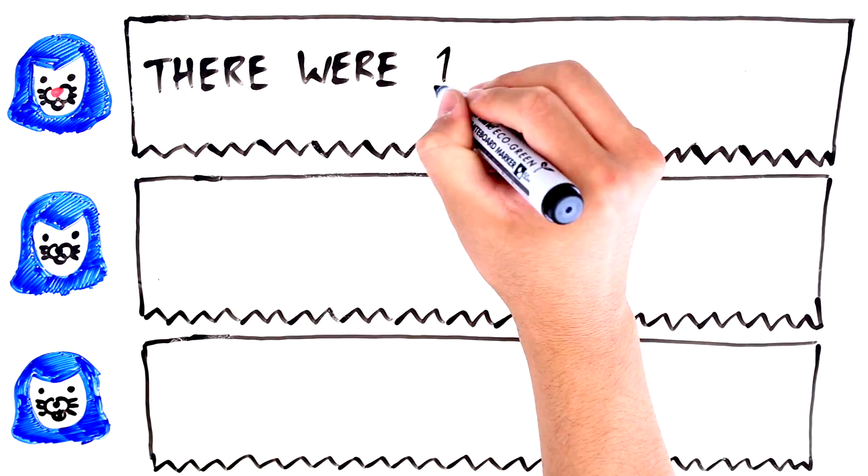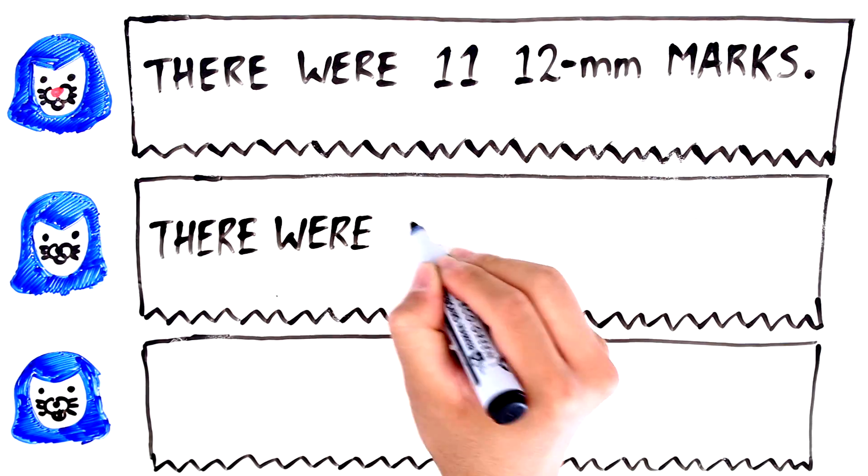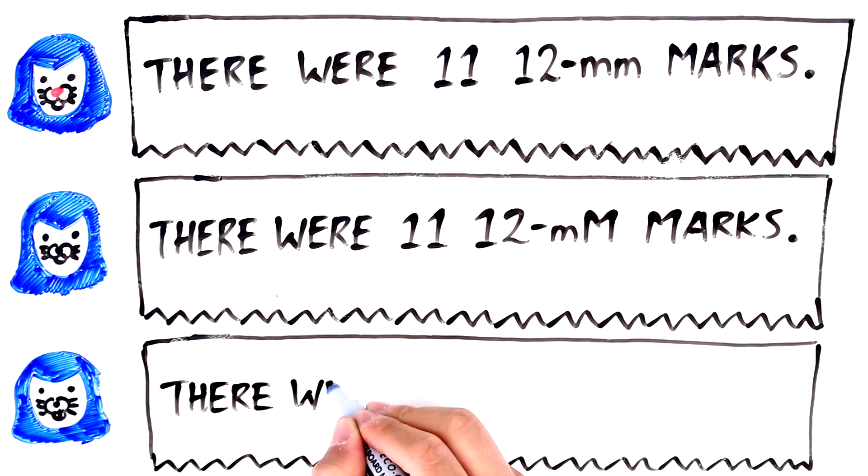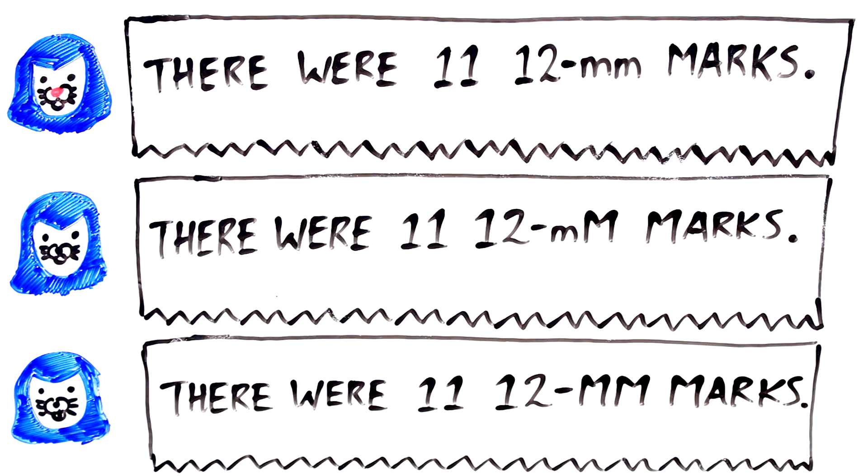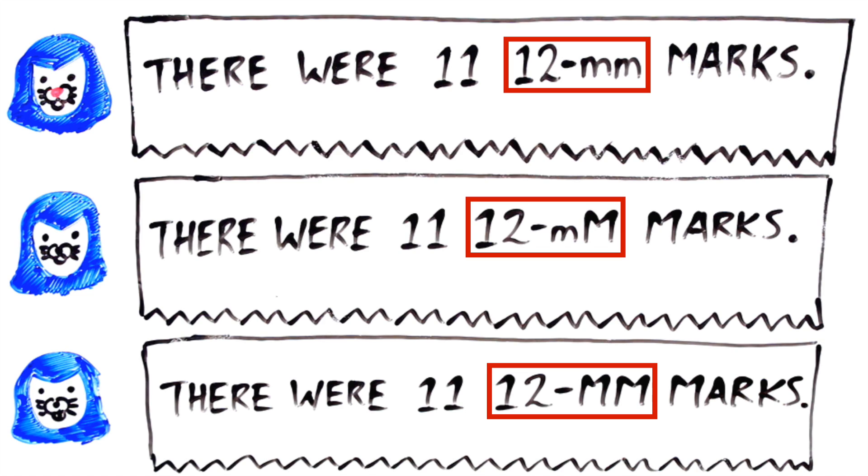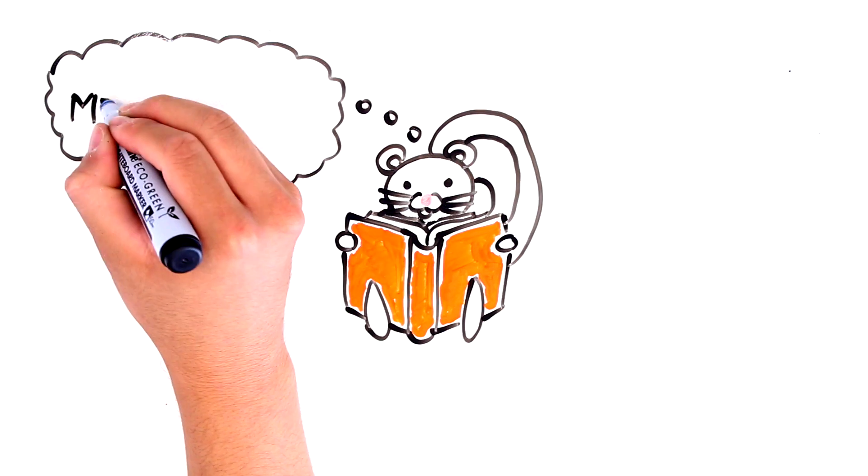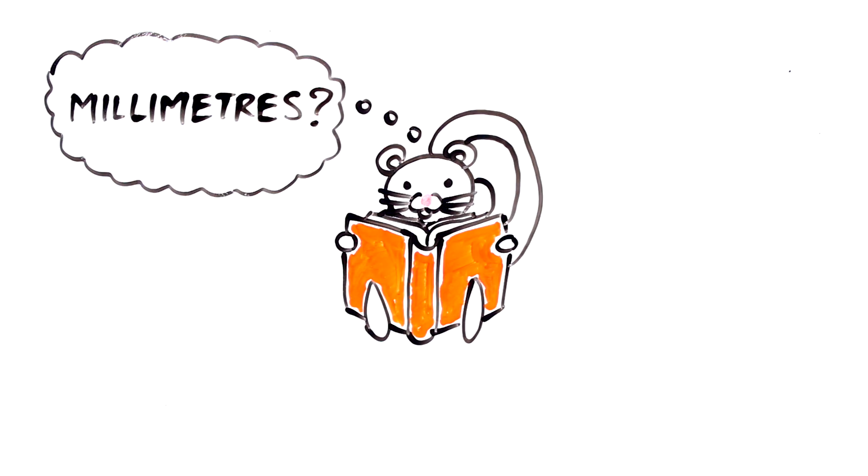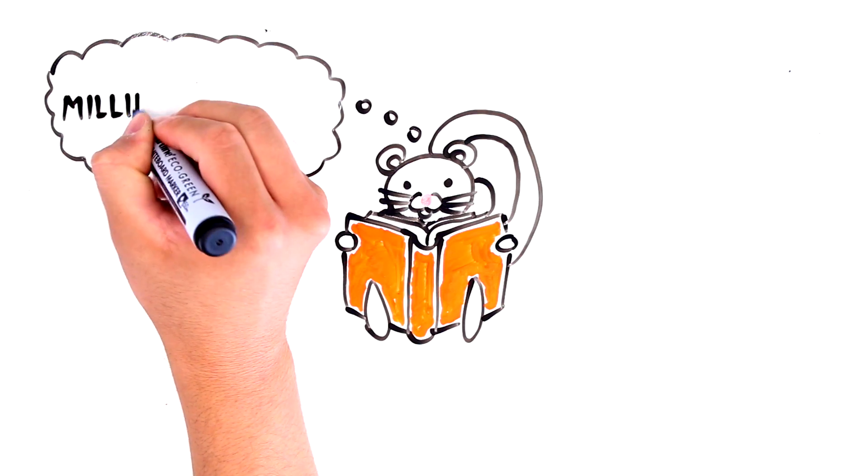As they return to their work, the squirrels are writing up the width of the lightning bolt scorches they found on the ground. But, there is some disagreement. Back to her textbook, Grammar Squirrel checks to see what the correct unit abbreviation is for millimeters.